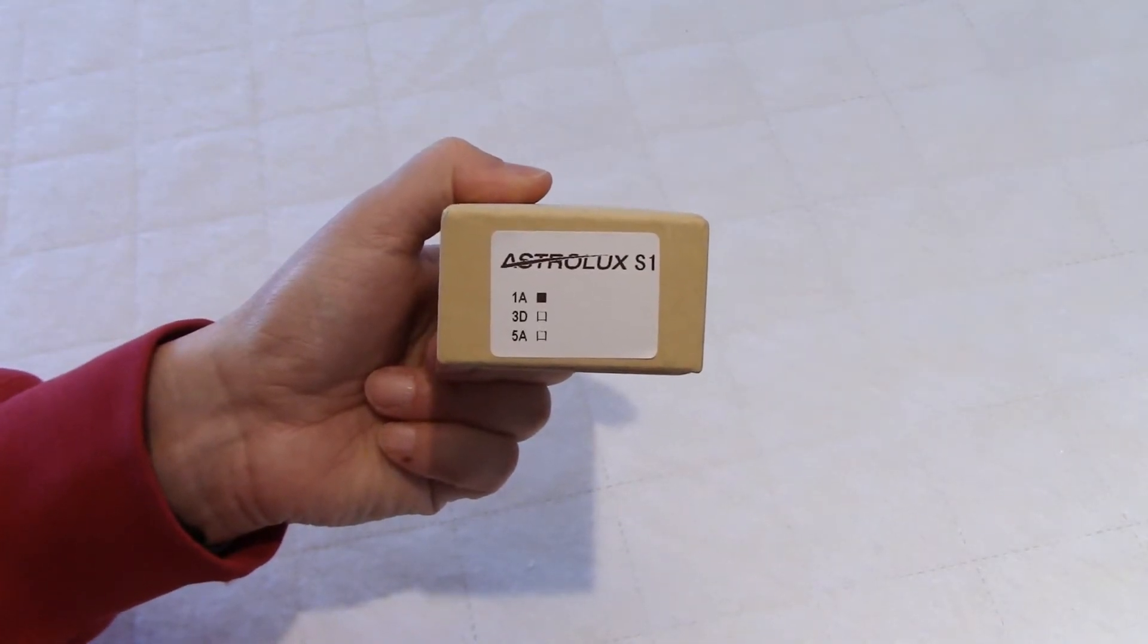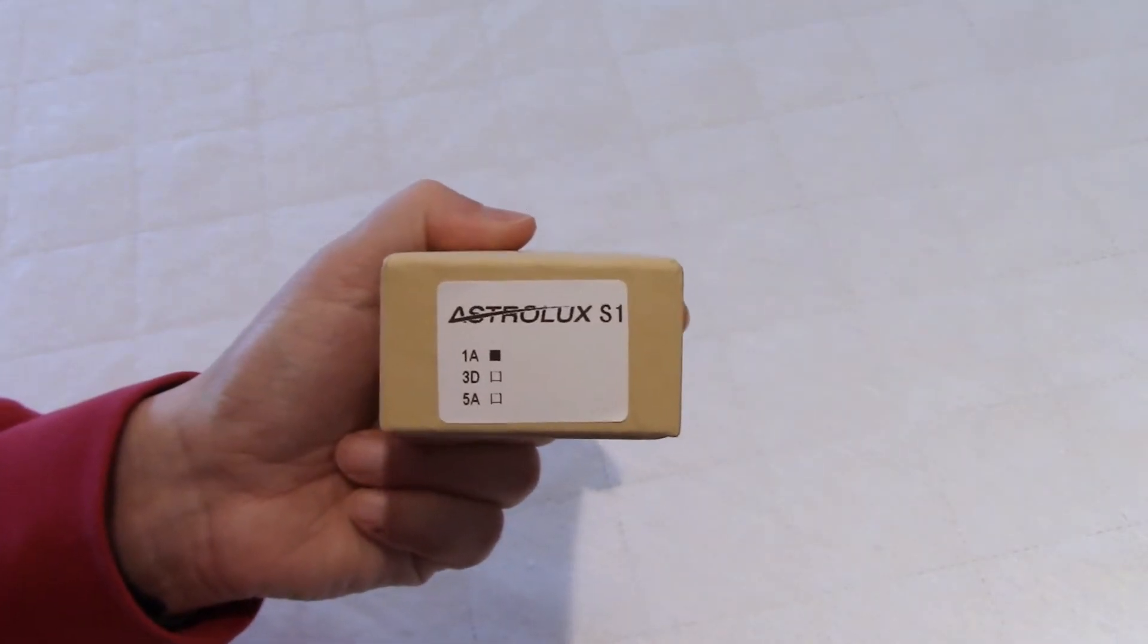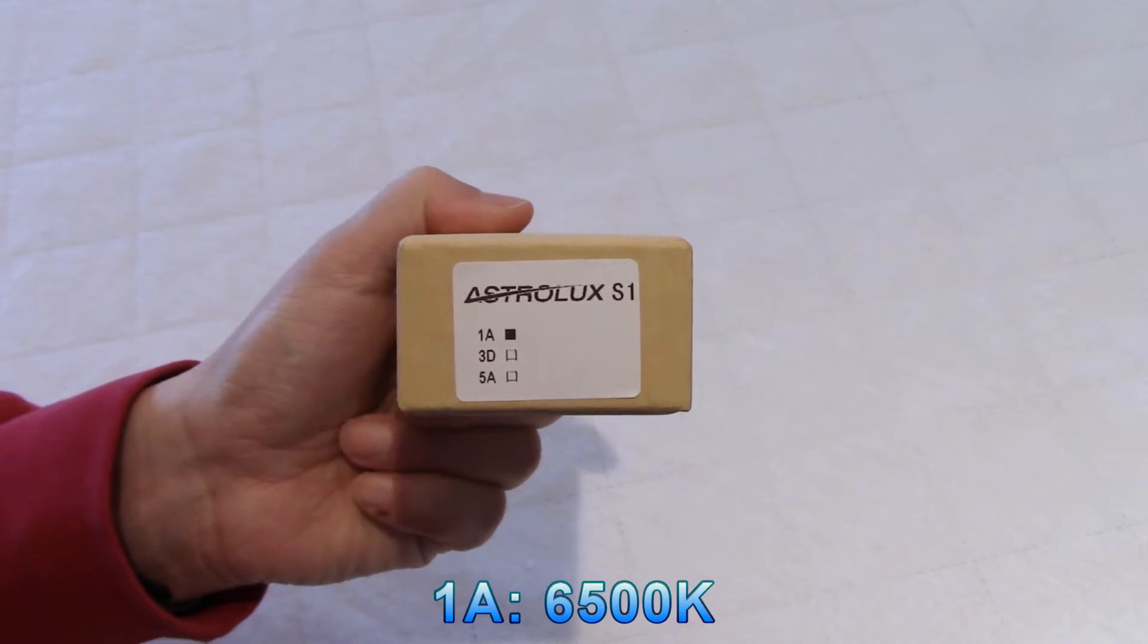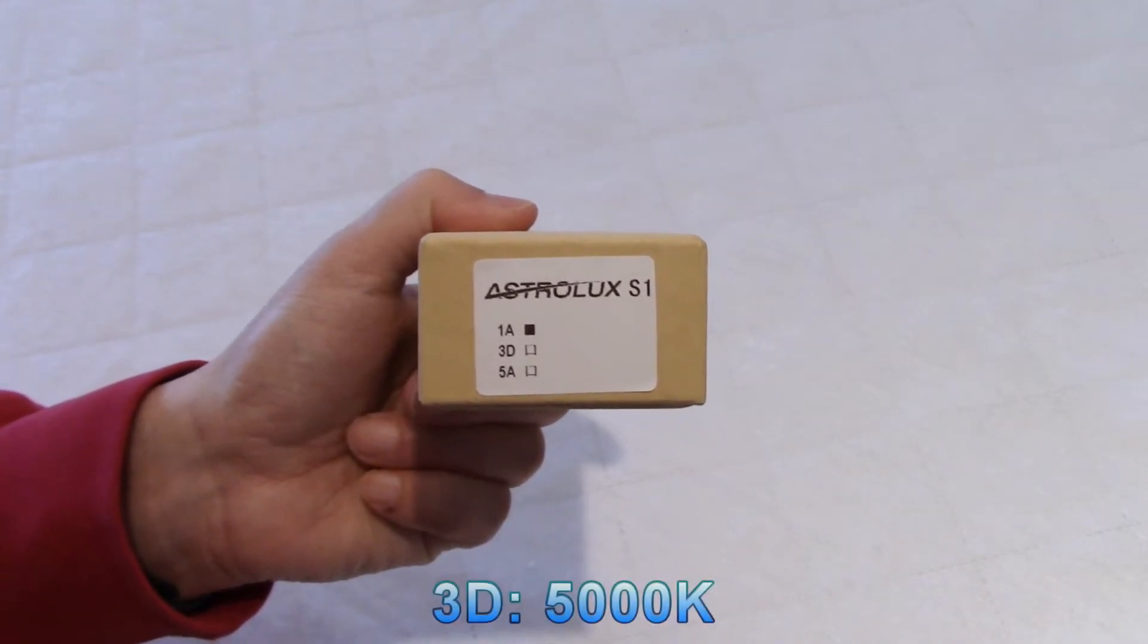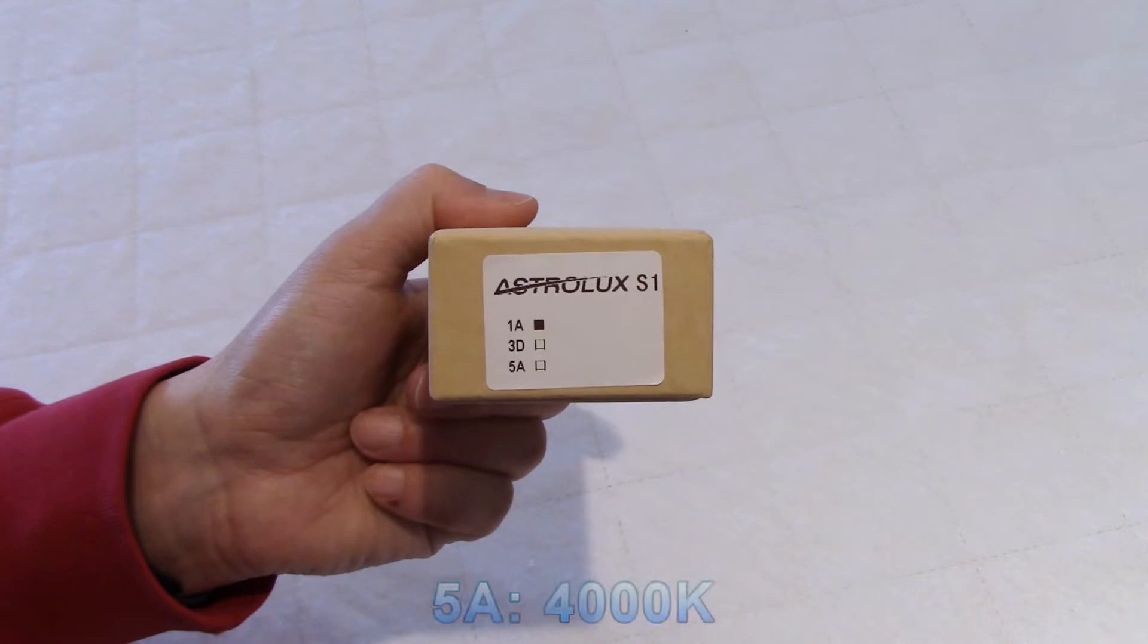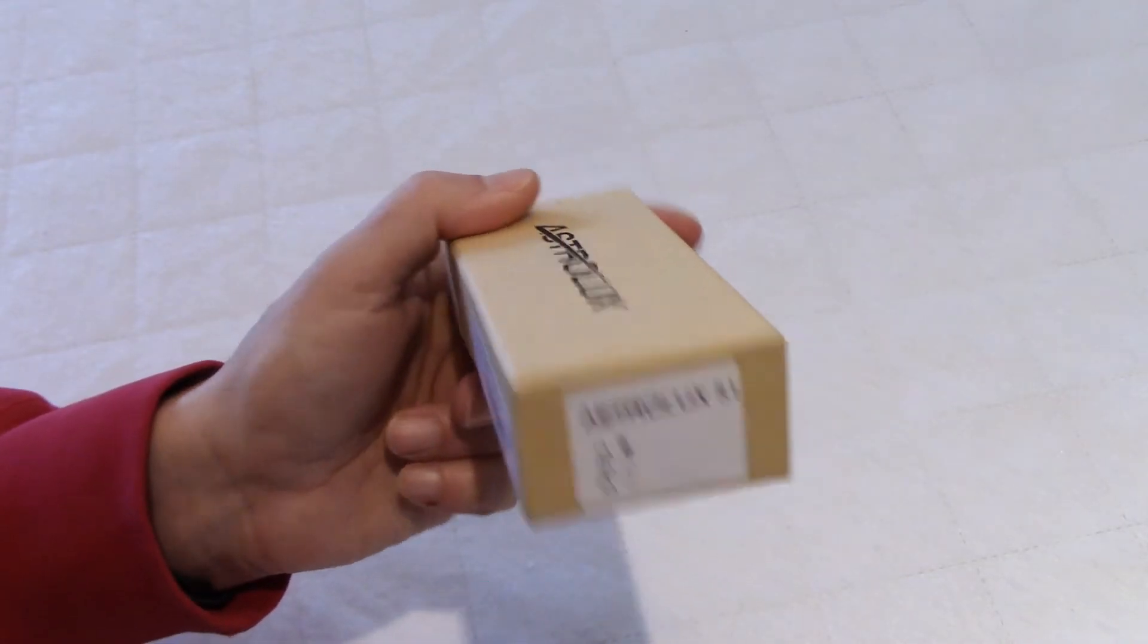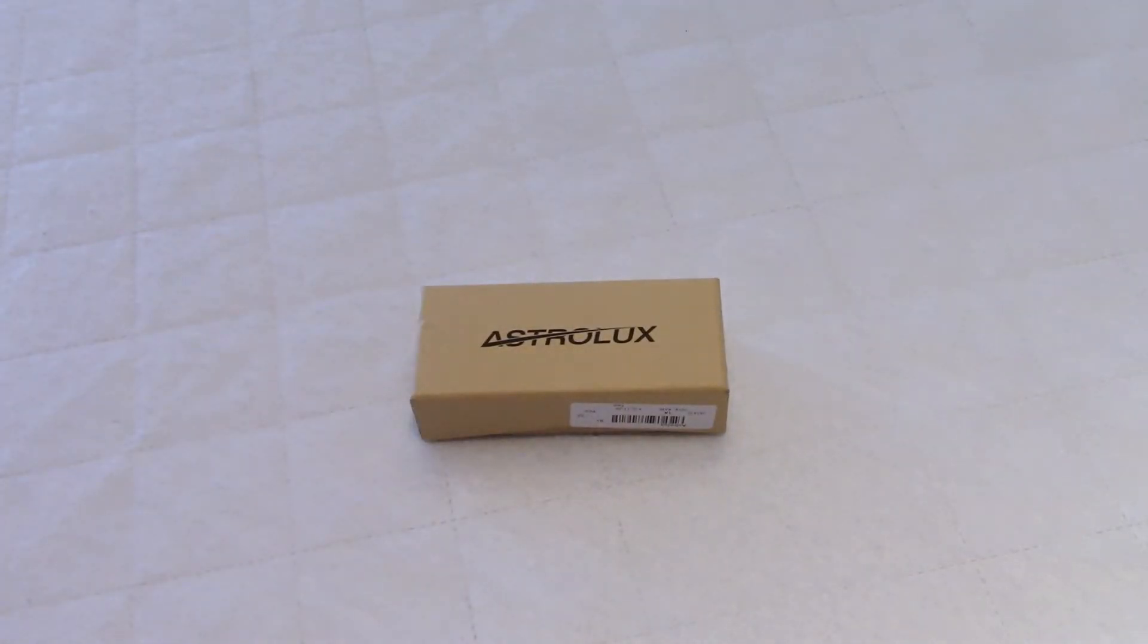So it comes in three versions. I have the 1A, that is a 6500 Kelvin color, so it's a cool white. The 3D is a 5000 Kelvin, so it's more like a yellowish white. And the 5A is a 4000 Kelvin, it's a very yellowish color. So I have the 1A here, the cool white. Let's open the box.